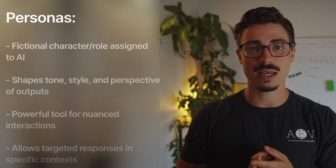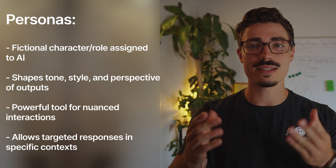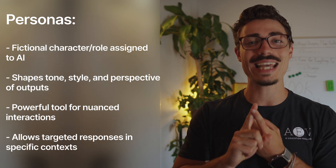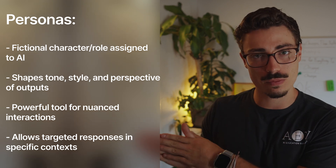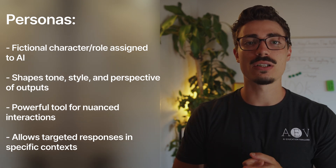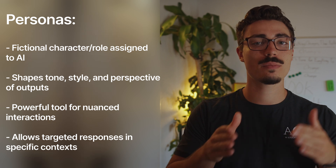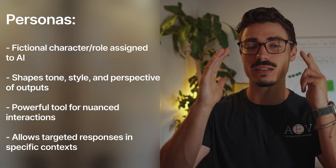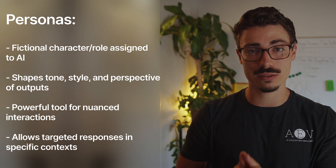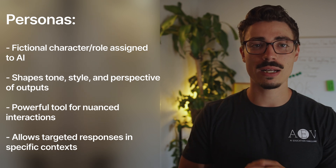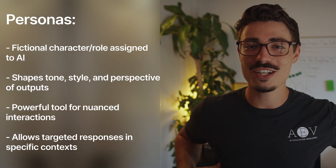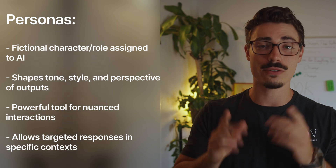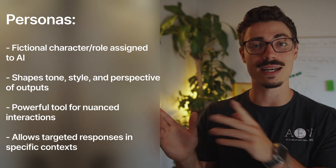In the context of AI prompting, a persona is a fictional character or role assigned to the AI to influence its responses. By instructing the AI to adopt a specific persona, you can shape its tone, style, and perspective of its outputs. This technique is a powerful tool in our prompt engineering toolkit, allowing for more nuanced and targeted interactions with AI systems.